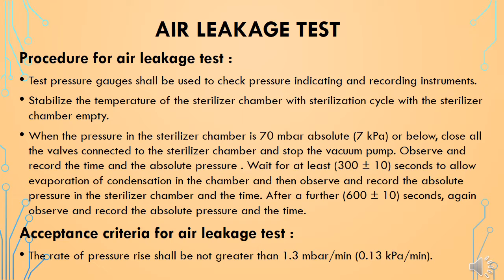After a further 600 ± 10 seconds, again observe and record the absolute pressure and time. The acceptance criteria for air leakage test: if the chamber is leaking, the pressure inside will rise. The rate of pressure rise shall be not greater than 1.5 millibar per minute or 0.13 kPa per minute.